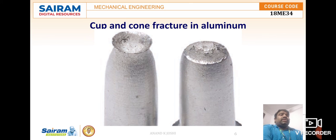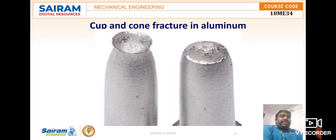Next, we discuss brittle material. Brittle material is one in which there is no neck formation — once a load is applied, it will suddenly fail. Glass is the best example of a brittle material. There is no cup and cone structure after breaking or failure of the material. More points will be discussed in the next video.